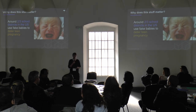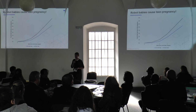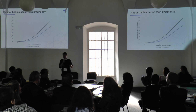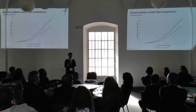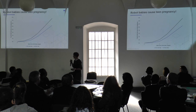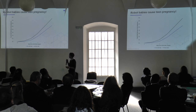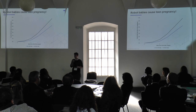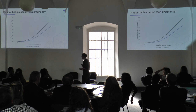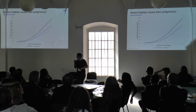Somebody ran a randomised control trial on this. It turns out that robot babies cause teen pregnancy. I don't know what the mechanism is — it might be that your parents step in and look after the annoying robot baby, it might be that you think it's not that bad, or that you think it's really cute. The reality is that girls who have been given these robot babies are having more first pregnancies in the years afterwards. This is why we do RCTs. This is not a study of ours, but this is why RCTs matter.